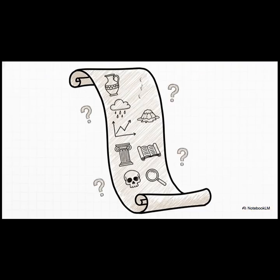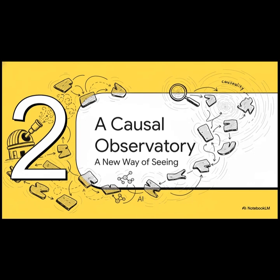The researchers behind this work put it perfectly: our understanding often just ends up as a laundry list of disconnected fragments. You've got an archaeologist who knows all about pottery styles, and a climate scientist who knows everything about monsoon patterns. But how do you get them to connect those dots and see the real story? To solve that, we're going to need a whole new way of seeing — a way to weave all those different threads of knowledge together into a single, coherent picture.